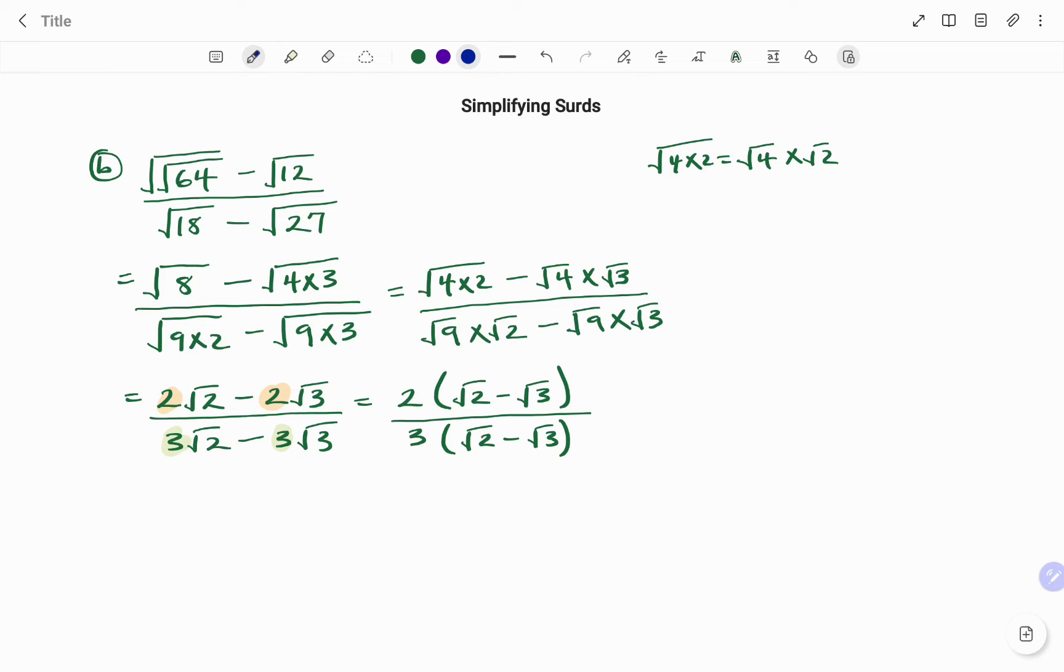Note that I have the same numerator and denominator, I have a common factor root 2 minus root 3, so that divides each other. So therefore, my final answer will be 2 over 3.